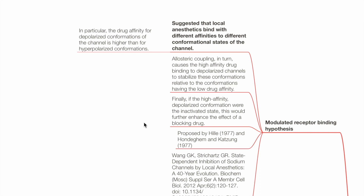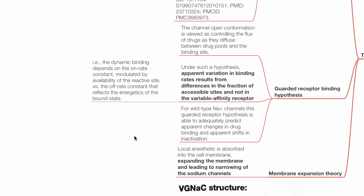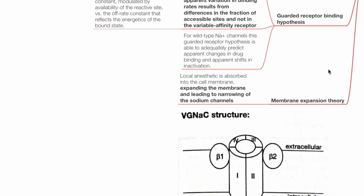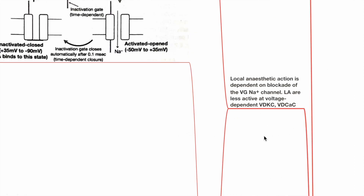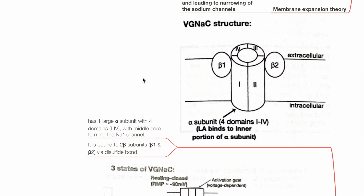If the high-affinity depolarized conformation were the inactivated state, this would further enhance the effect of a blocking drug. In the guarded receptor binding hypothesis, channel open conformation is viewed as controlling the flux of drug as they diffuse between drug pools to the binding site. Apparent variation in binding rates results from differences in the fraction of accessible sites, not in variable affinity of the receptor. Membrane expansion theory postulates that LA absorbed into the cell membrane expands the membrane, which narrows the sodium channels. The VGNAC consists of one large alpha subunit with four domains forming the middle core of the sodium channel; the alpha subunit is bound to two beta subunits via disulfide bonds.